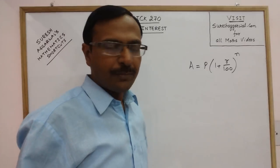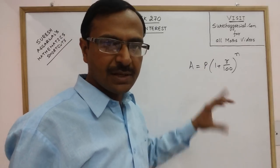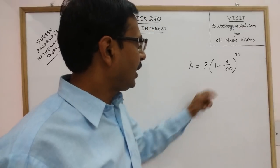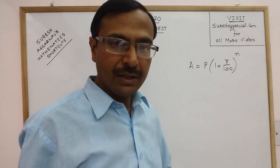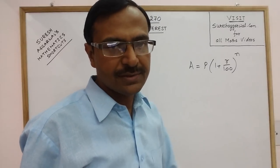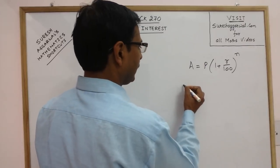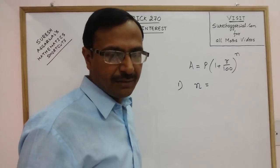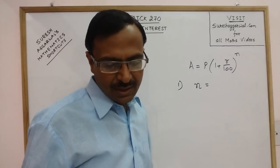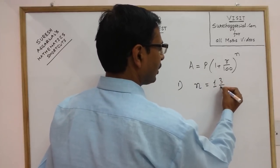In this formula, obviously A is the amount, P is the principal that is the amount deposited, R is the rate of interest and n is the time that is number of years. Now suppose the time n is given in fractions, like suppose we have 1 3/4 years.